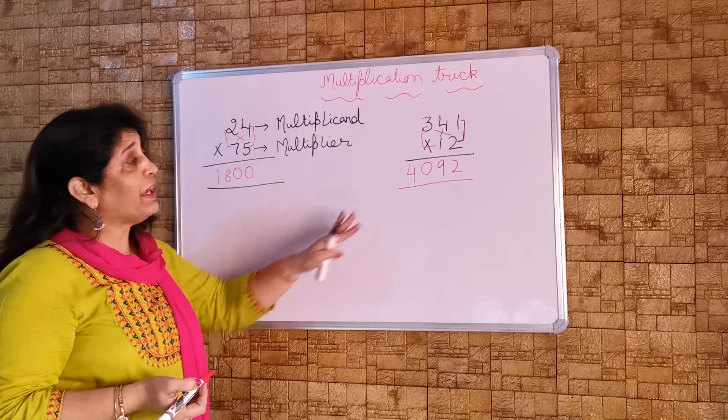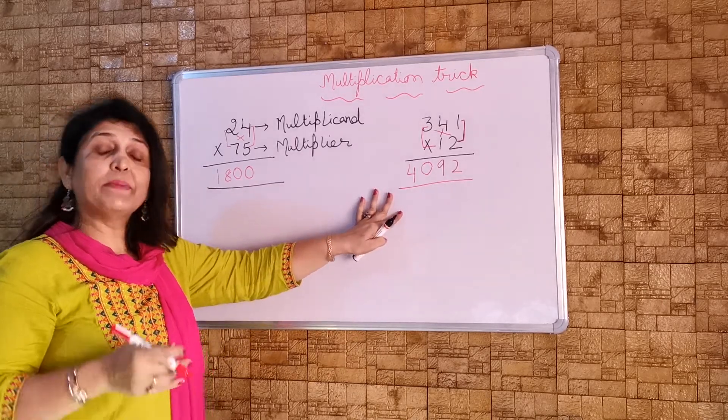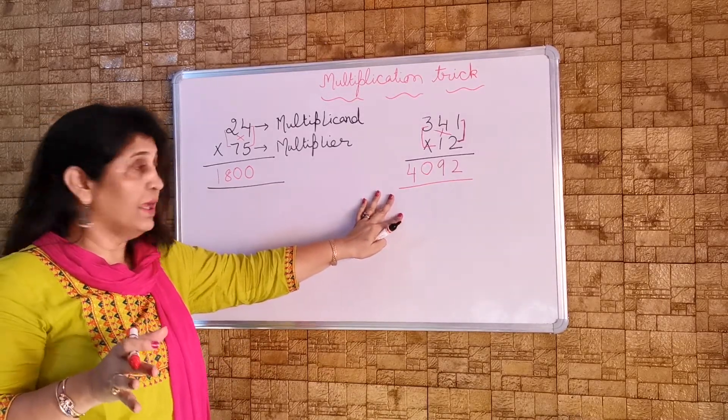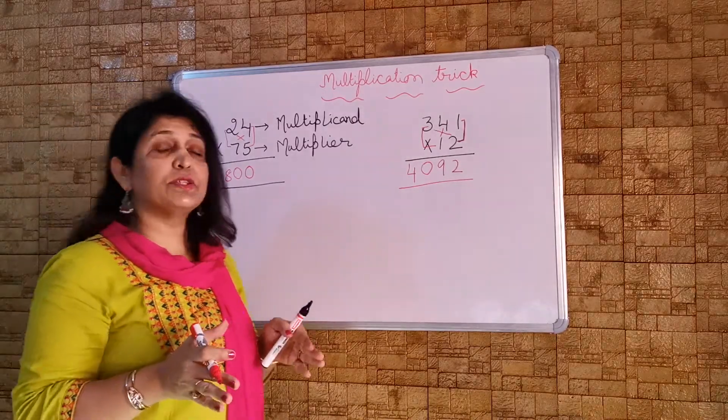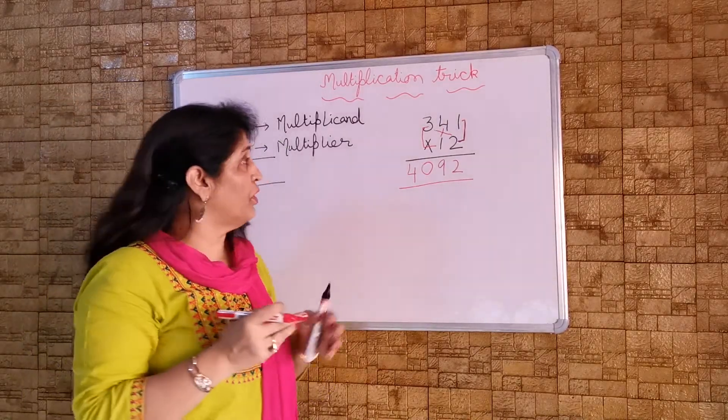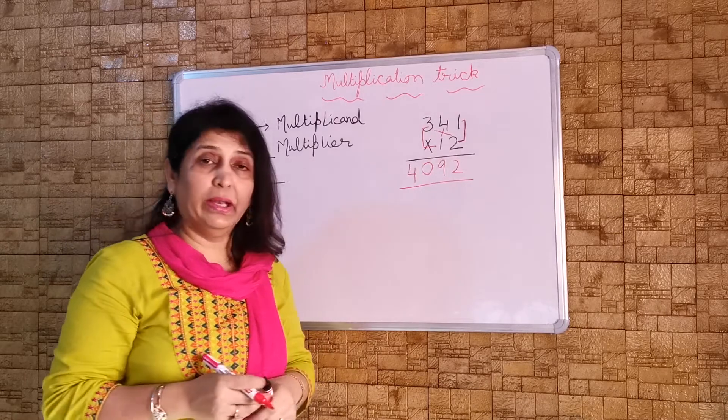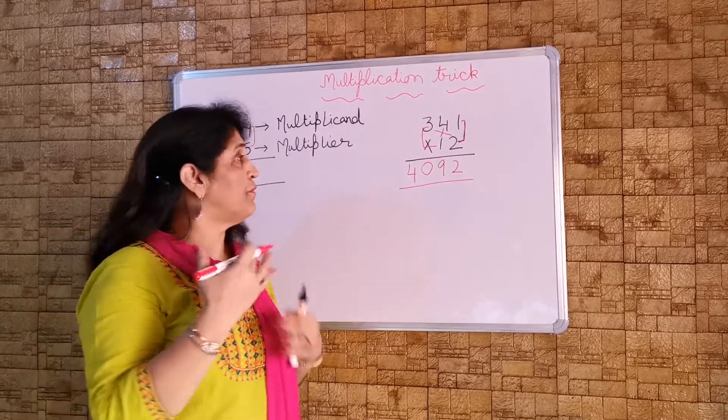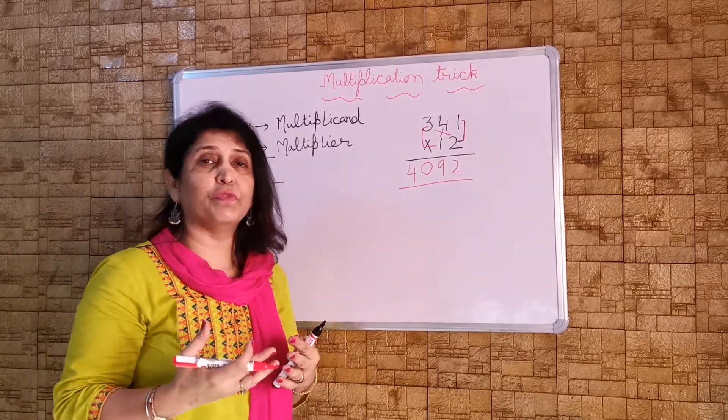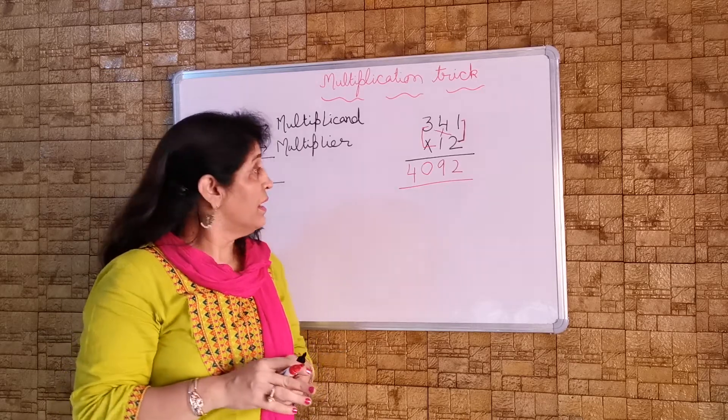And now I will put 0 here. And 3 times 1 is 3 plus 1 is 4. Now you see the answer has come out as 4092. It didn't take much time. It becomes easy also if we do practice. In the initial stages you may get confused with the cross and all. But if you do it, if you revise it twice or thrice, you will find it very easy.